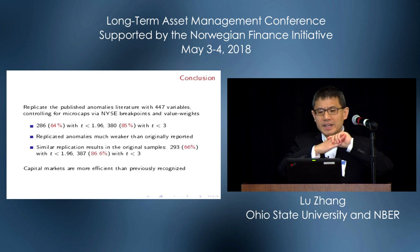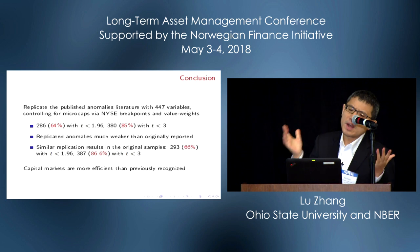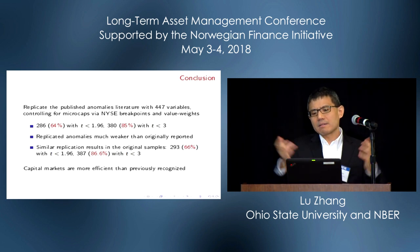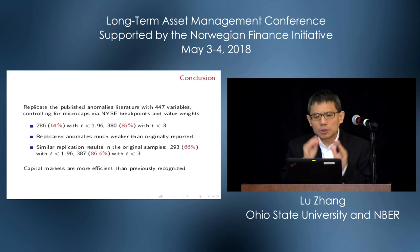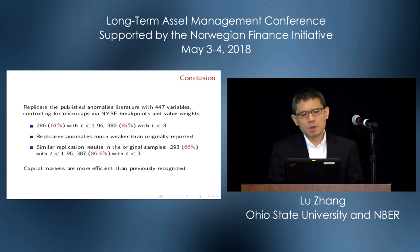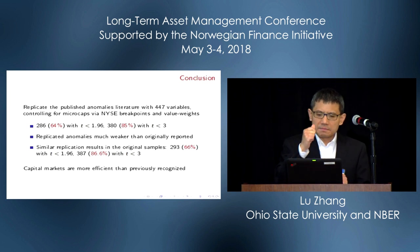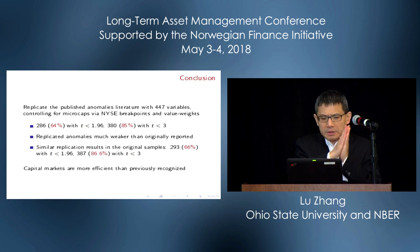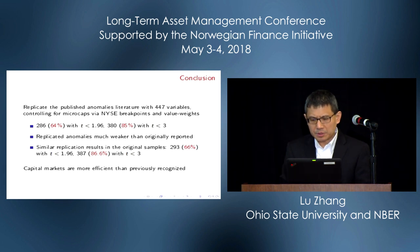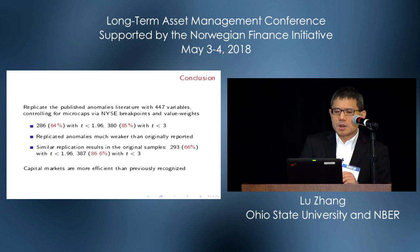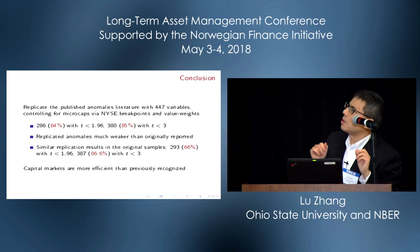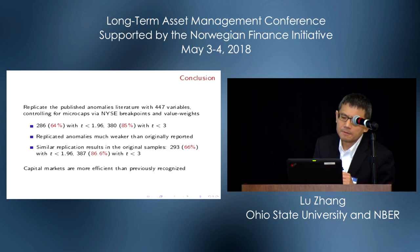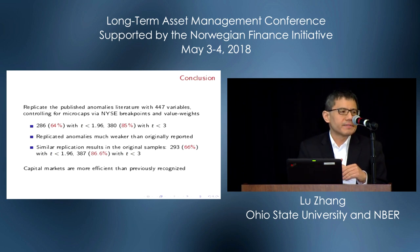In conclusion, we replicate the bulk of the anomalies literature with 447 variables, controlling for microcaps using NYSE breakpoints and value-weighted returns. We document that 286 anomalies, or 64%, are not significant and fail to replicate; with a T cutoff of 3, that's 85%. Even for replicated anomalies, their economic magnitude is much weaker than originally reported, and our conclusion is robust to the original sample periods. We end up concluding that capital markets are more efficient than previously reported.